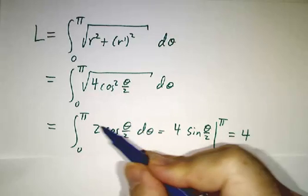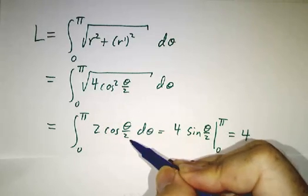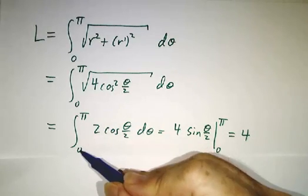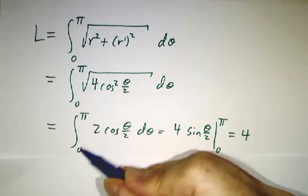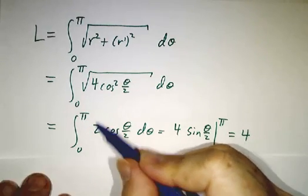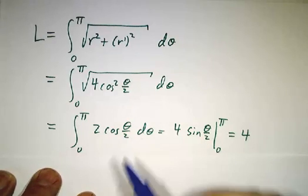You would really need twice absolute value of cos θ over 2. But between 0 and π, θ over 2 is between 0 and π over 2, and the cos is positive. If you wanted to go from 0 to 2π, you would need the absolute values.